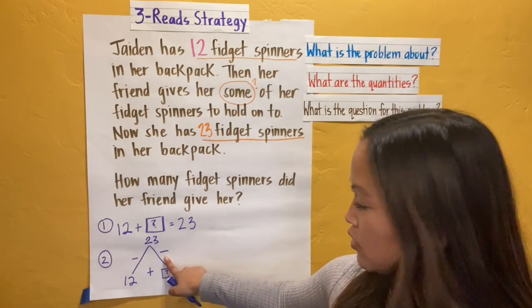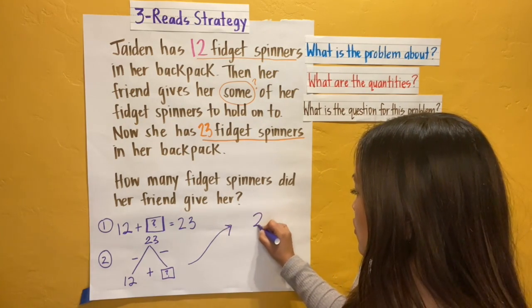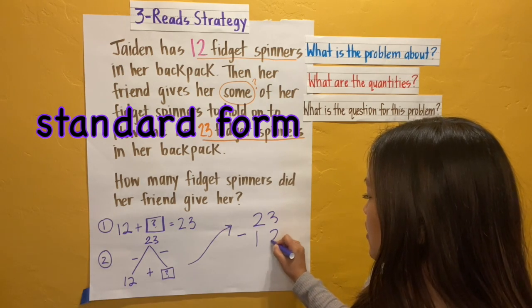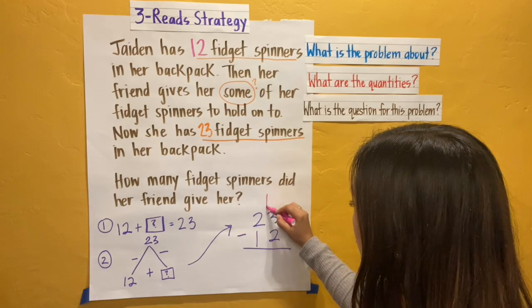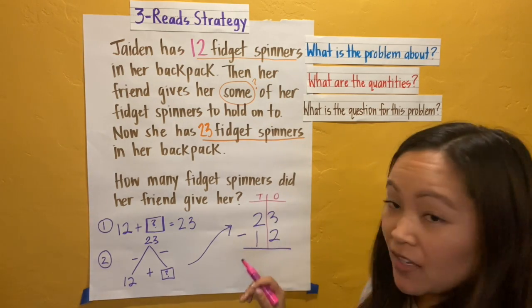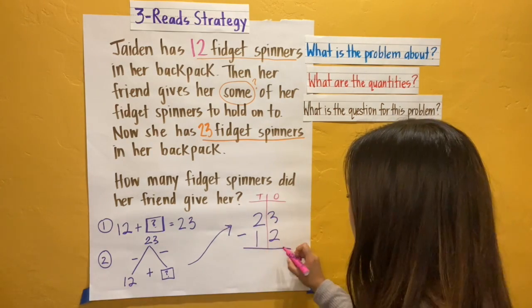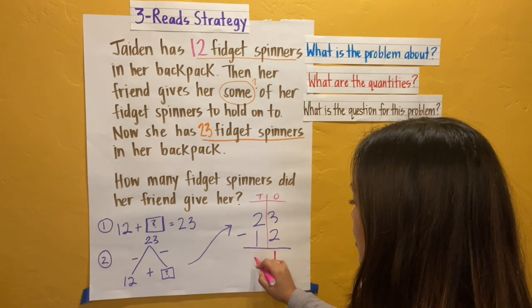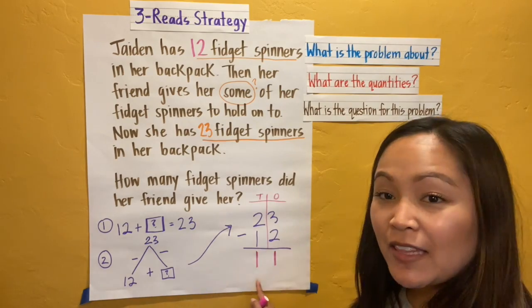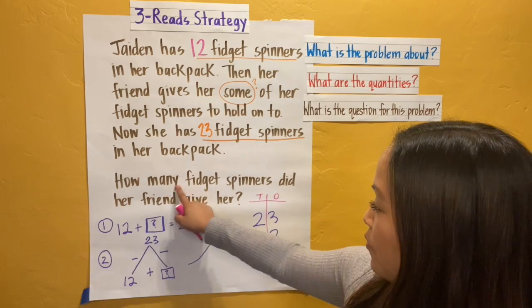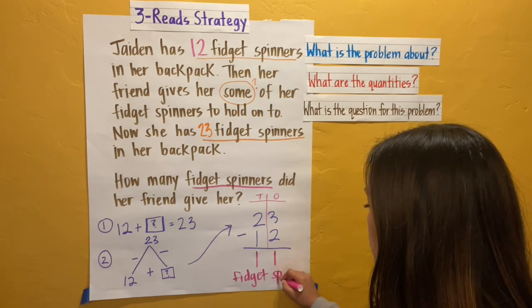I like to solve it using my math mountain. I know I can solve this missing add-in by doing 23 minus 12. So I'm going to put it in an equation, stack my numbers in standard form, and subtract. Before I subtract, I always draw my tens and ones place to help me. I always start in my ones place first. Three minus two — you can use your fingers, you can draw a picture — three minus two is one. Two tens minus one ten is one ten. Eleven. What am I missing? I am missing my label. My answer isn't just eleven — my answer is eleven fidget spinners. That's my label.